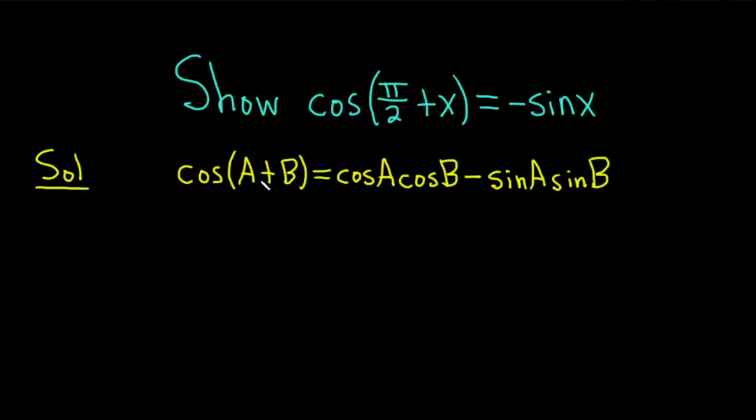Pretty easy to memorize and if you had a minus here, if you had cosine of A minus B, it would be exactly the same except instead of a minus over here you would have a plus. You just flip the sign.